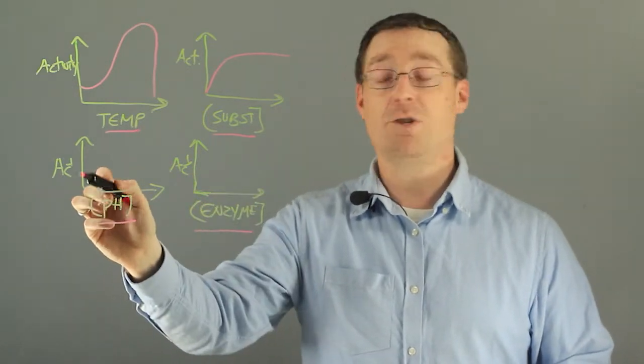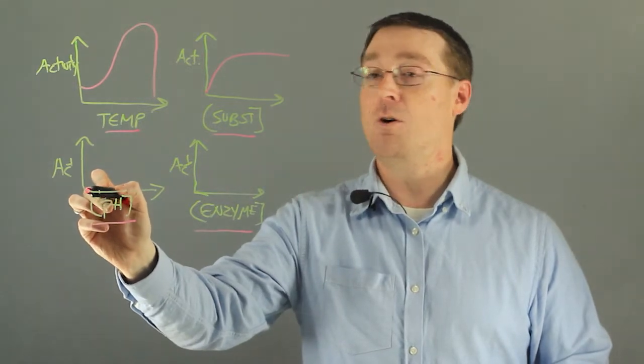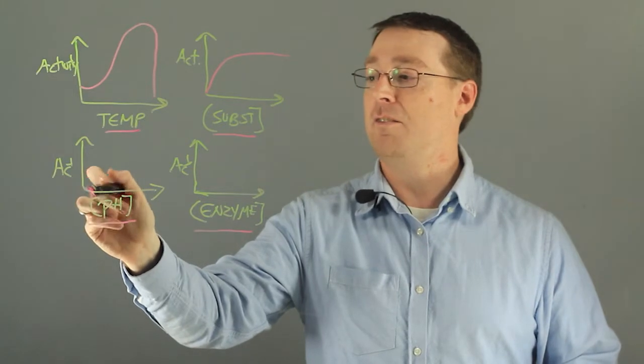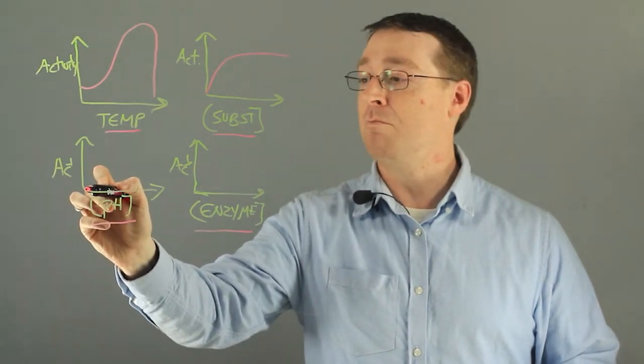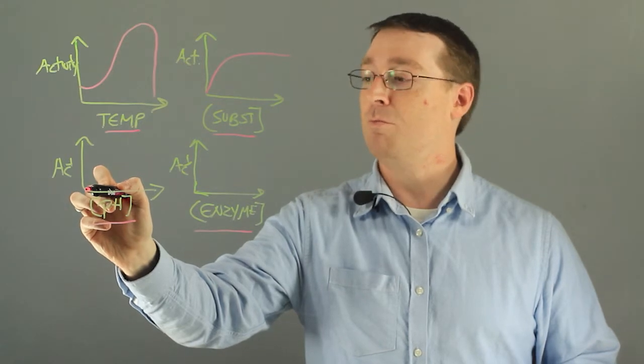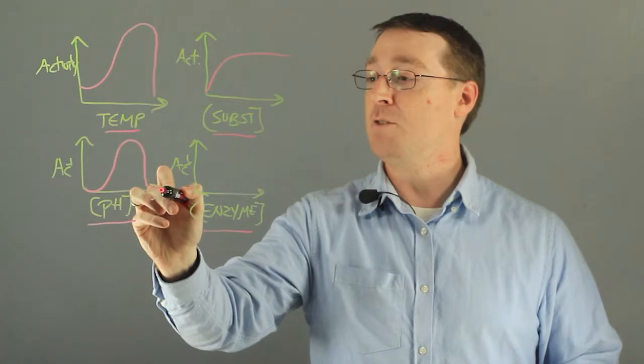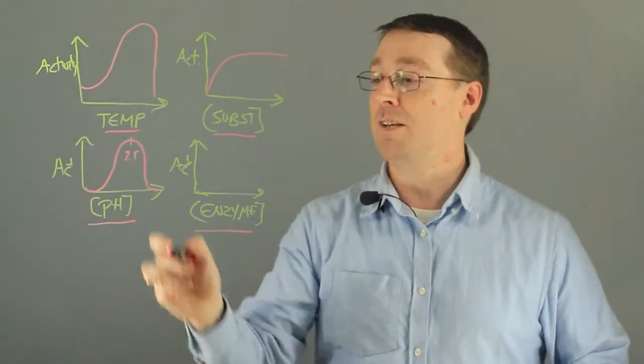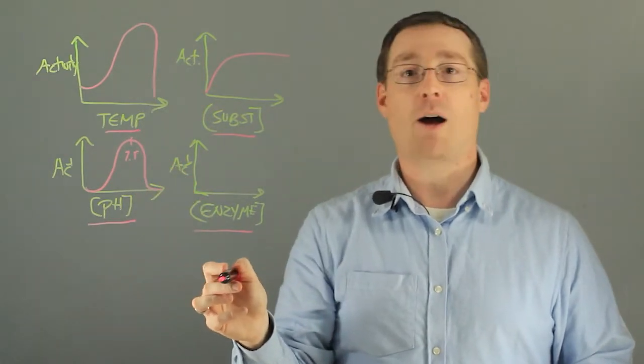At pH, which is a measure of acidity of the cell, at very low pH levels, which are essentially very basic, the enzyme rate of catalysis goes down. As we increase pH up to about 7.5, we get an optimal activity. And then as we get to higher and higher pH levels, the activity drops.